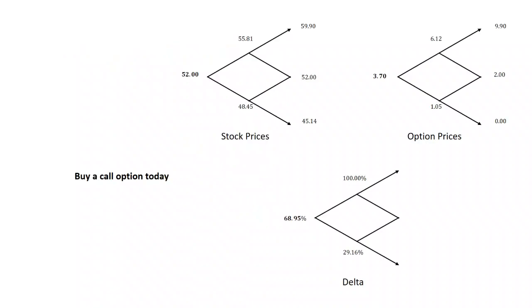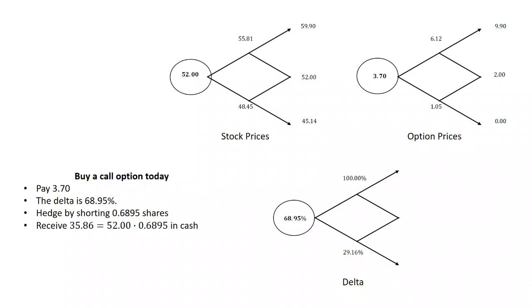We can think about the dealer strategy. The dealer is going to buy a call today. He's going to pay 3.70, that's the option price. The delta is 0.6895, 68.95%. So he hedges by shorting 0.6895 shares. When he shorts those shares, he receives $35.86 in cash. That's 52 times 0.6895. He has to invest $32.16. That's the money he received from selling the shares minus the 3.70 he paid for the option. So he invests at the risk-free rate of 5% for 0.125 years.